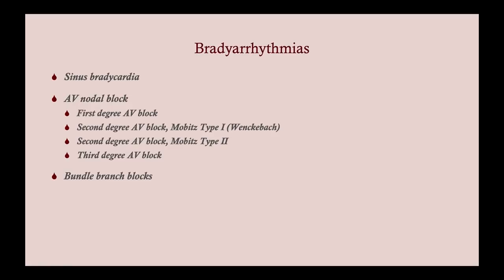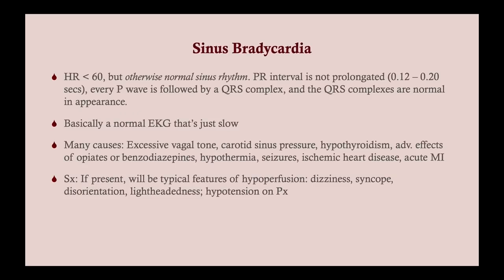We're going to talk about a variety of different bradyarrhythmias: sinus bradycardia, the four AV nodal blocks that you'll see on the test, and then bundle branch blocks. Sinus bradycardia is simply a heart rate of less than 60, but otherwise it's a totally normal EKG. You're going to need to get EKGs to diagnose any of these. The PR interval is not prolonged — remember that a normal PR interval is anywhere between 0.12 and 0.2 seconds, which is approximately one big box. Every P wave is followed by a QRS complex, and the QRS complexes are normal in appearance. You don't have any dimples on the QRS complex.